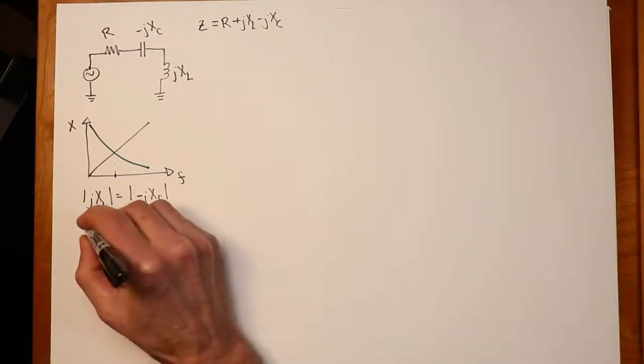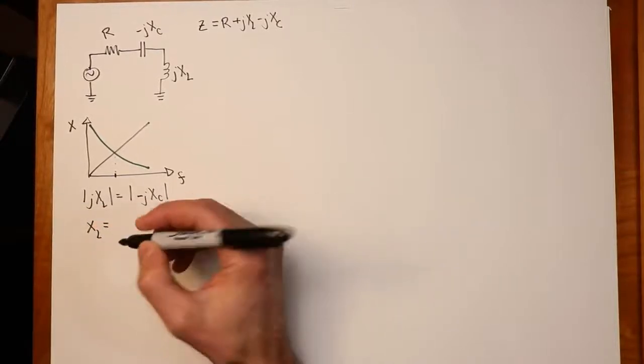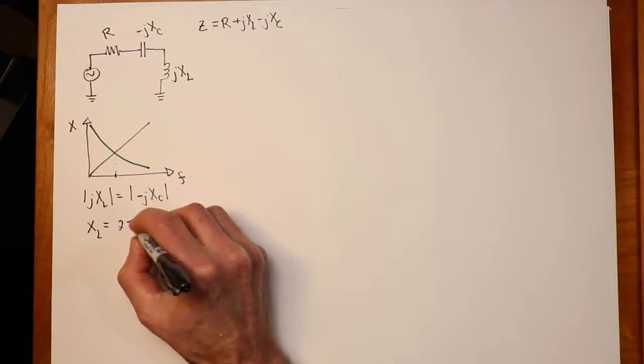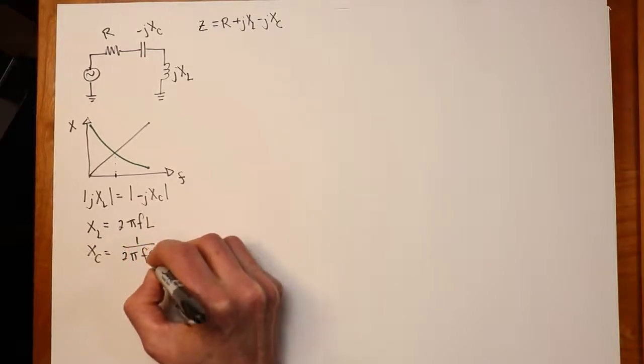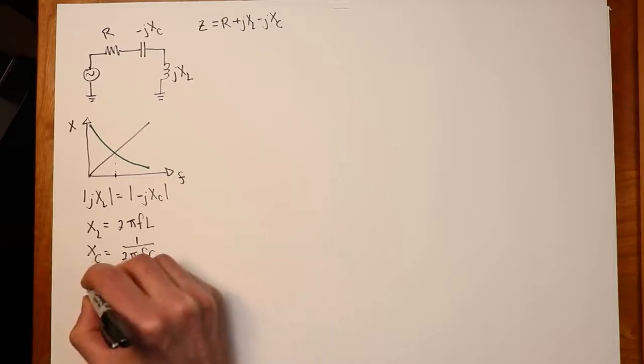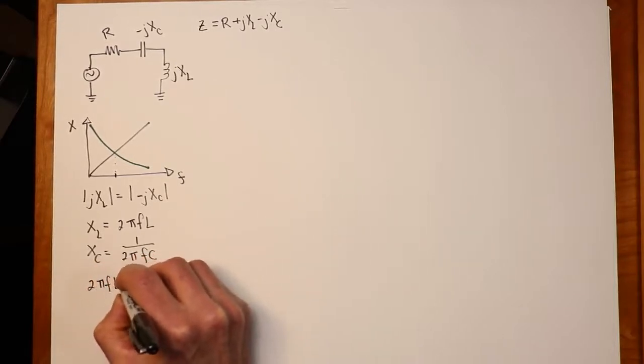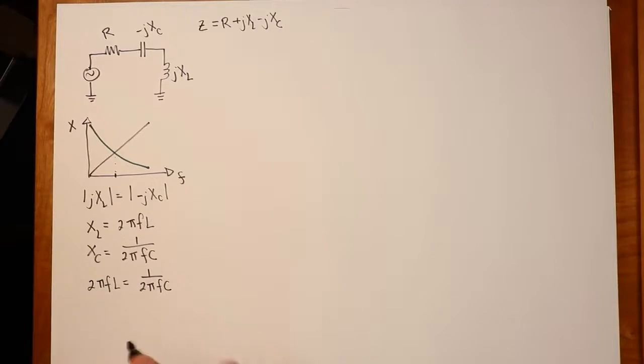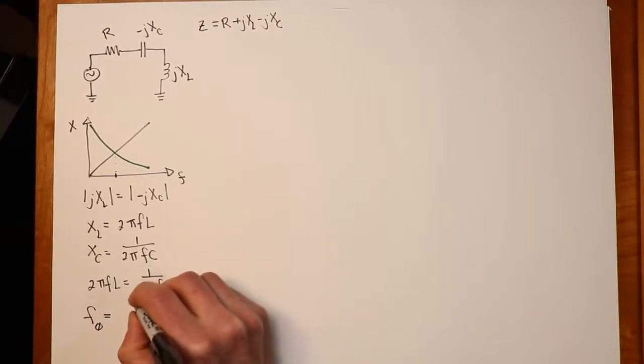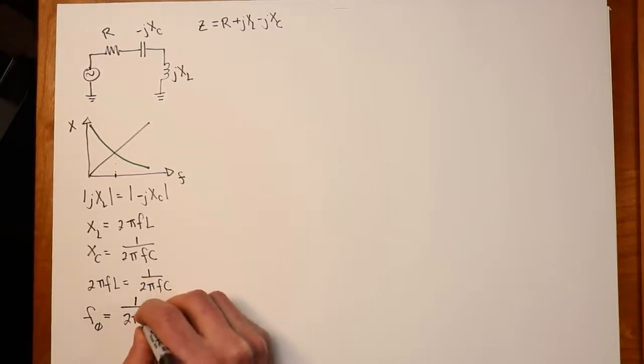Well, the question then becomes, what is that frequency? That frequency is found by simply equating these two expressions. Xl is going to equal 2πfL, and Xc, similarly, would be 1 over 2πfC. So, we just set those two things equal. 2πfL has to equal 1 over 2πfC. That frequency we refer to as f0, and when we solve this, we just bring this over and we get 4π²f²LC. You solve this for f, and f0 is going to be equal to 1 divided by 2π times the square root of LC. So, we refer to that as the resonant frequency.